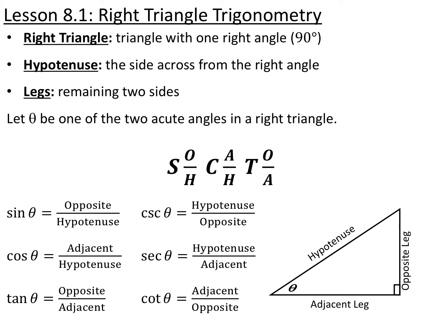We can evaluate our six trig functions in our triangle. We've heard the mnemonic SOHCAHTOA before, where sine of the angle is the opposite side over the hypotenuse, cosine is the adjacent side over the hypotenuse, and tangent is the opposite side over the adjacent side. The other three trig functions are reciprocals of those: cotangent is adjacent over opposite, secant is hypotenuse over adjacent, and cosecant is hypotenuse over opposite.